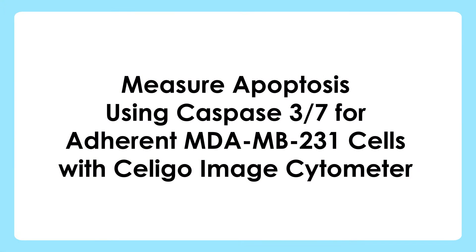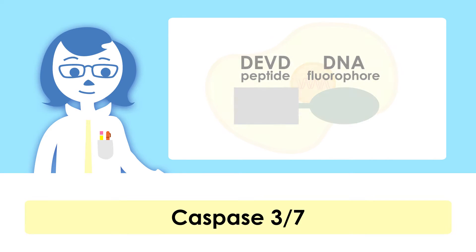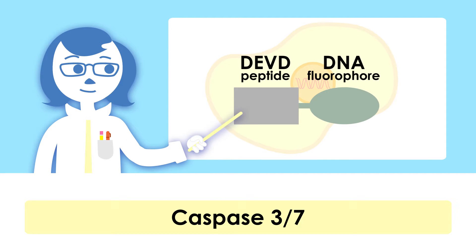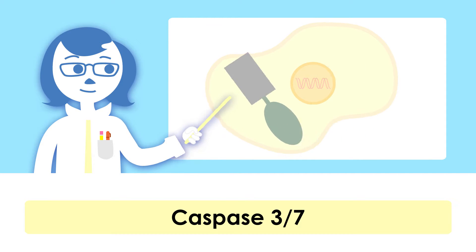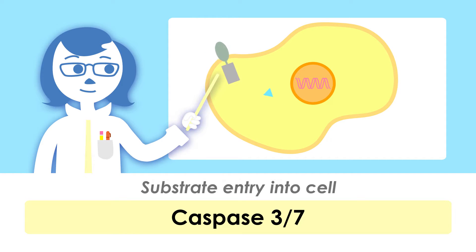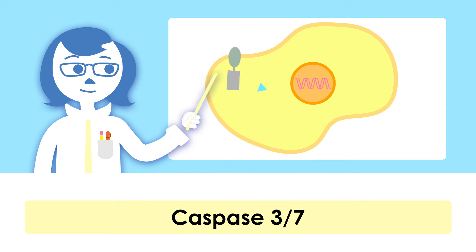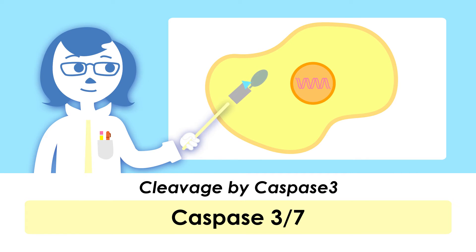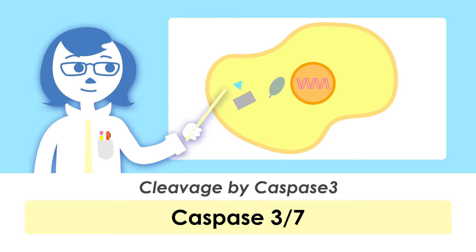Let me first take a moment and describe the assay principle. DEVD is a caspase 3-7 specific sequence that is coupled with a DNA dye molecule. This substrate can freely diffuse across the cell membrane in live cells. Once inside apoptotic cells, the caspase 3-7 protein recognizes and cleaves the DEVD sequence and releases the DNA probe.